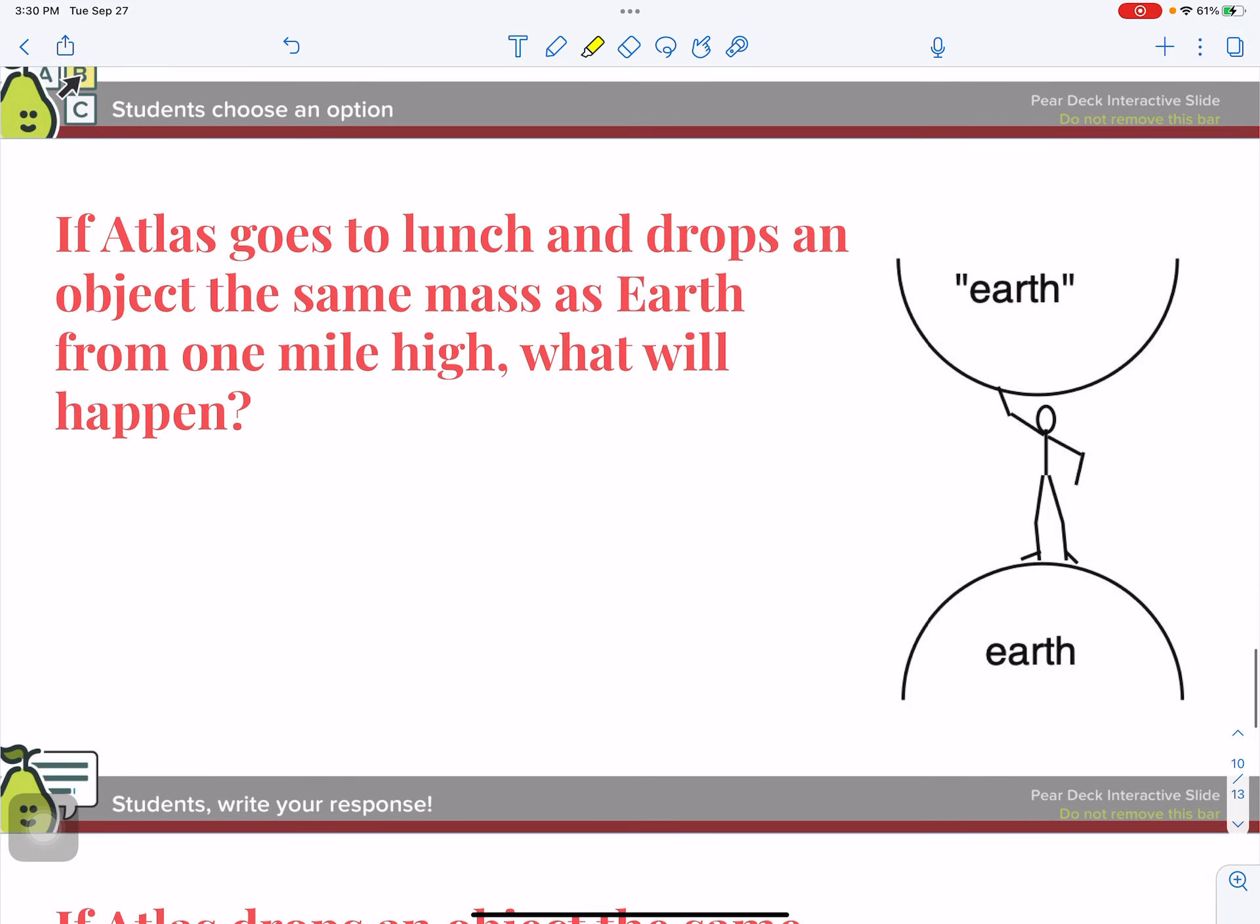Alright, suppose Atlas goes to lunch and he drops an object the same mass as earth from one mile high. What will happen? And I think the short answer is that they will be equally attracted to each other. And so they're both going to move towards each other. They're going to crash, but they're going to crash exactly in the middle because they have the exact same mass. So they have the same force of attraction, just like the tennis ball and the earth has the same force of attraction.